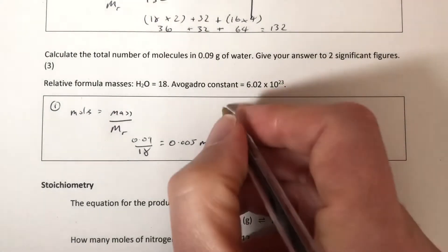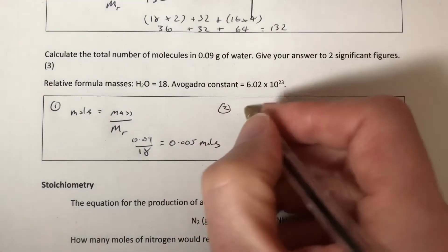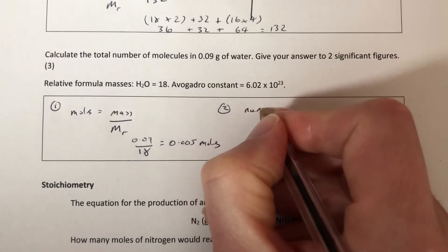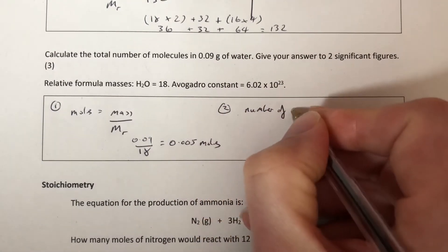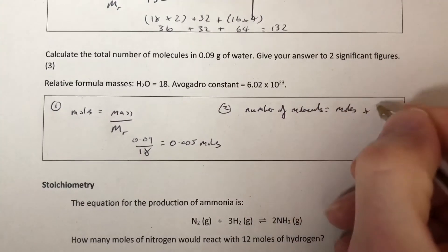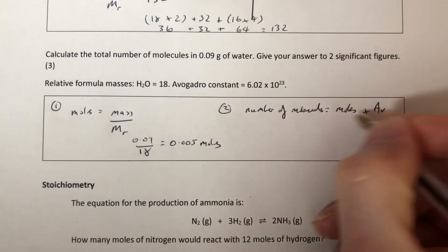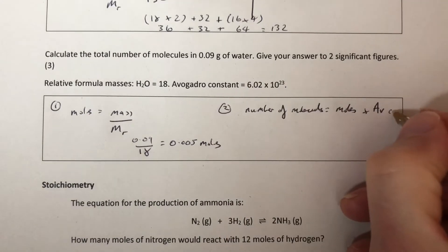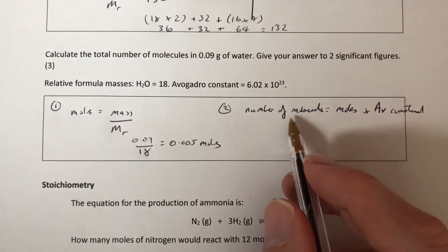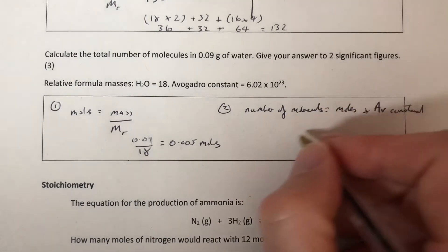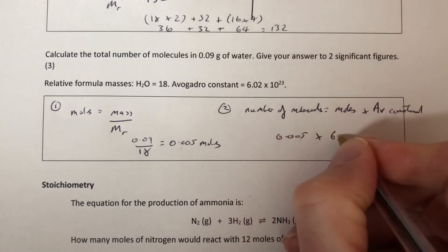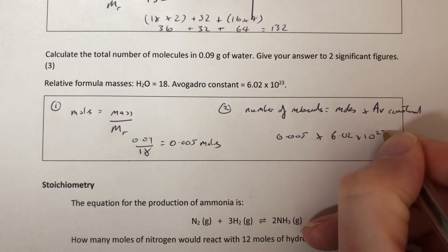Second stage now. We need the formula: number of molecules equals moles times the Avogadro constant. I'm just going to write AV because I'm a bit short on space. We need this formula quite a lot, so it's worth learning. The moles here is 0.005 times the Avogadro constant, 6.02 times 10 to the 23.